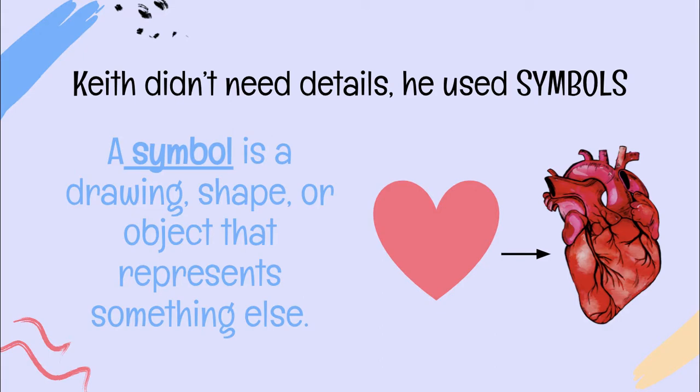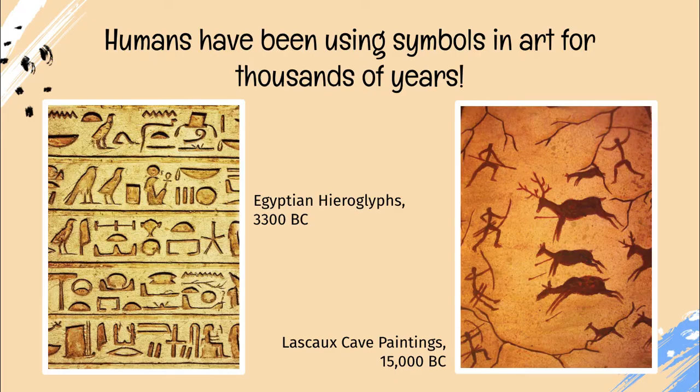He used few details but instead used symbols. A symbol is a drawing or shape of an object that represents something else — much like a simple heart shape symbolizes a very elaborate feature of a real heart. This use of symbols began very early in the history of art; you can see it in Egyptian hieroglyphs and in the Lascaux cave paintings.